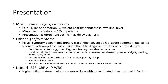Neonatal osteomyelitis is multifocal in 27 to 55 percent of cases. Risk factors include prematurity, immature immune system, and central venous catheters. Lab findings show elevated white blood cell count and higher inflammatory markers, which are more likely associated with disseminated infection than local infection.